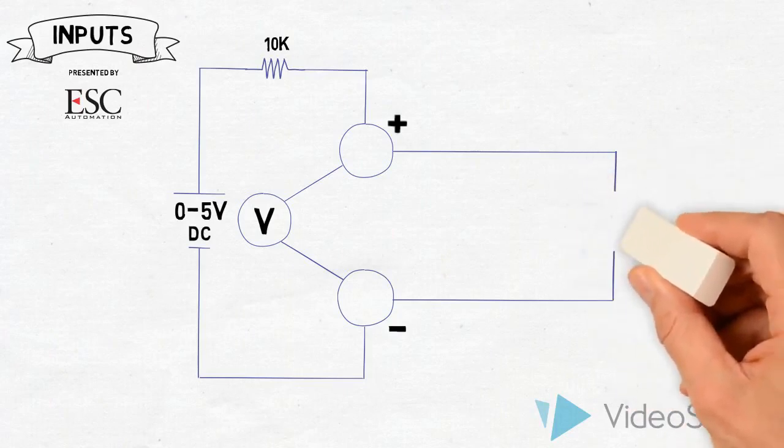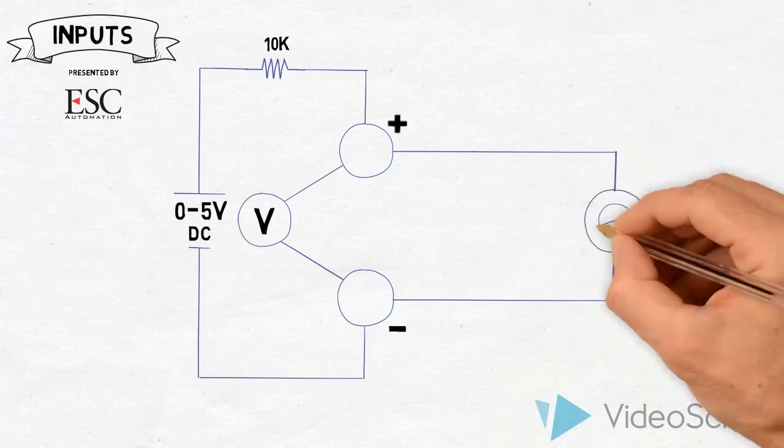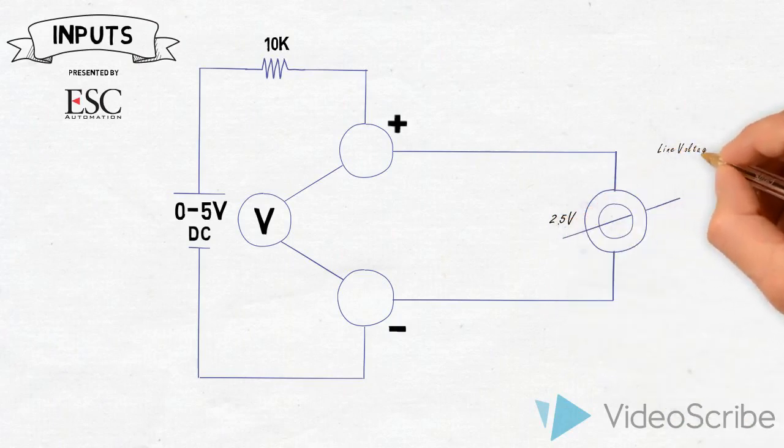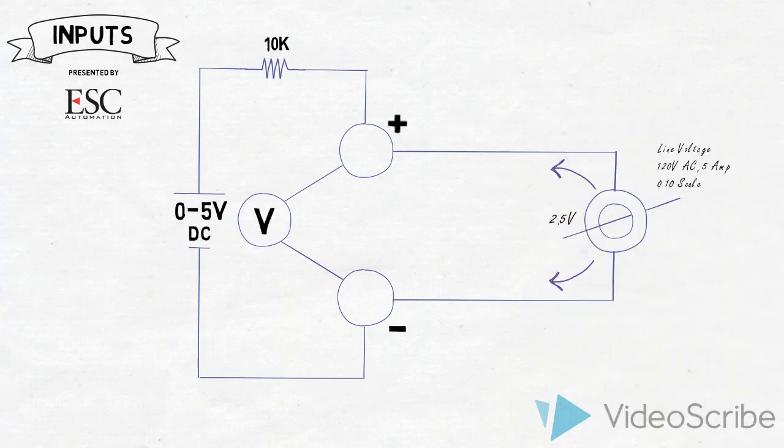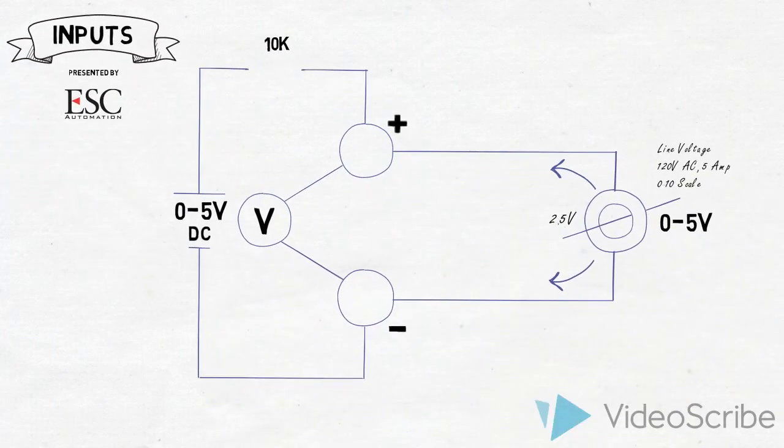The next input is a current sensor—a donut that wraps around a line voltage. The current sensor provides a voltage to the panel, zero to five volts. When we set the dip switch on the panel, the resistor gets pulled out and there's no power supply coming from the panel. Now the voltmeter reads the voltage from the actual device, not from the panel's power supply. We convert zero to five volts from the device to amps.